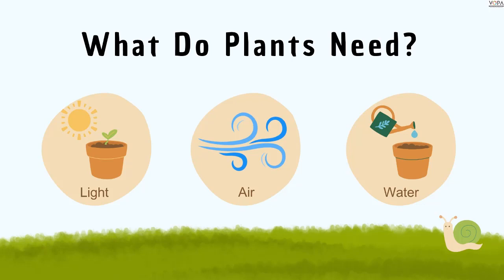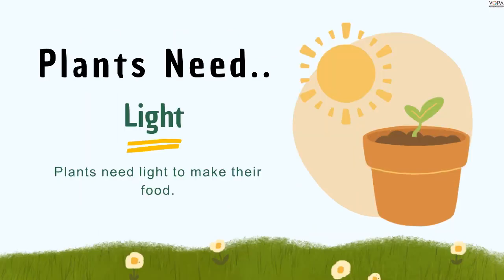So students, plants need three things: light, air, and water. So let us discuss all these things. It starts with the light. Plants need light. For what purpose? Plants need light to make their food.